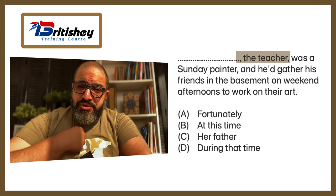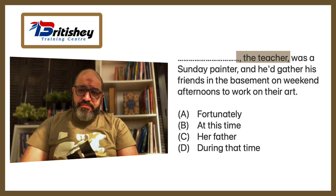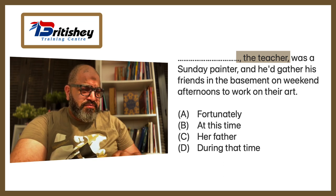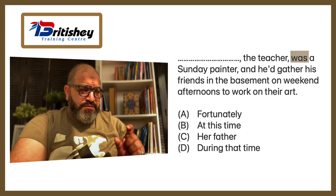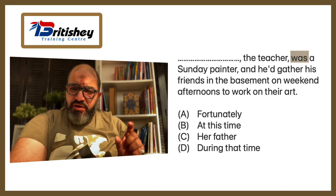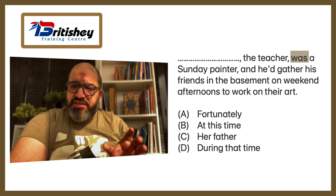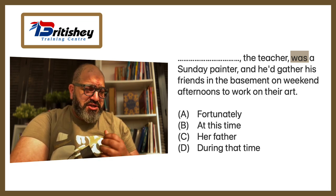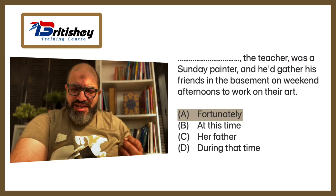When we say that 'the teacher' is an appositive, this means that it cannot be a subject, which means that we need to check whether there is a subject in the sentence or not. When we look at the sentence, we see 'was a Sunday painter' — so we've got the verb 'was'. We've got a verb without a subject. We know that 'the teacher' is not a subject because it's an appositive. Where is the subject? Let's look for it in the options. Option A: 'fortunately' — that's not a subject, that's an adverb.